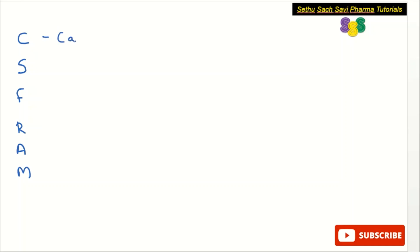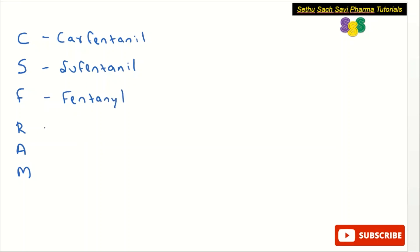Now let us compare the relative potency of the Fentanyl group. You can remember this mnemonic: CSF RAM. C stands for Carfentanil, S stands for Sufentanil, F stands for Fentanyl, R stands for Remifentanil, A stands for Alfentanil, and M stands for Morphine.